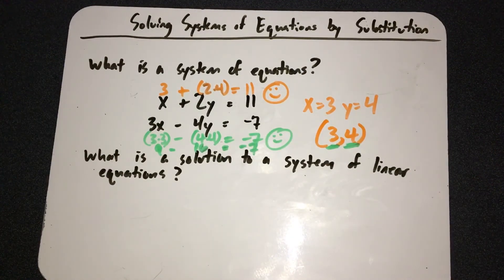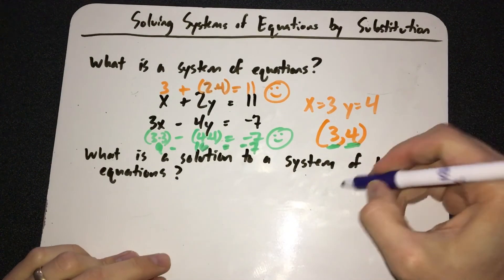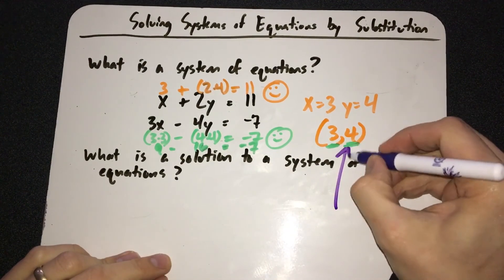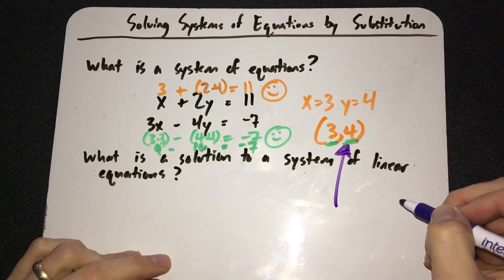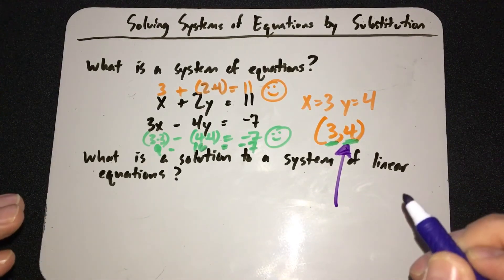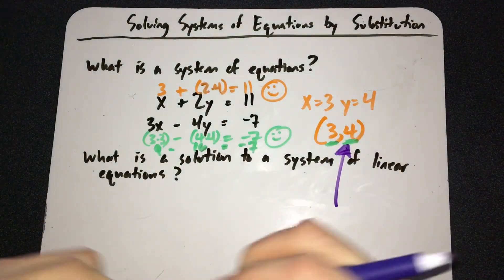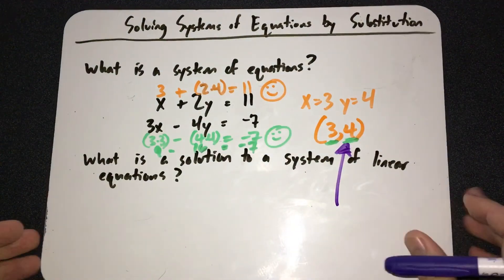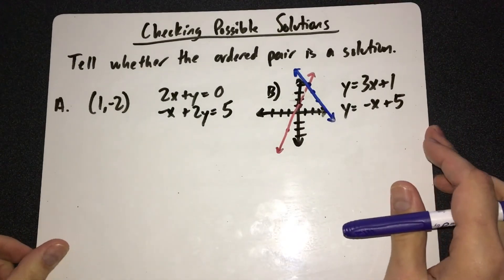Both equations have to be true — it can't just work for one, it's got to work for both. That is what your solution is. Your solution is a point on the graph where the lines would intersect if we're graphing it. But we'll actually graph it another day — that's one of the other strategies.